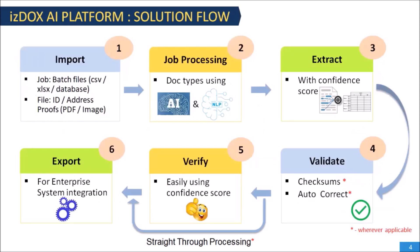How does the AI platform work? KYC documents in scanned PDF image format are imported into the platform with the help of a job processing engine. Auto-identification of the documents is done using the classification engine. The extraction engine automatically extracts required data from the documents for auto-validation. Subsequently, auto-validation of the data is done. The data extracted with a very high confidence score is considered for straight-through processing.